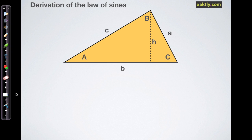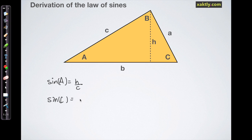I'm going to break this triangle — as we can for all non-right triangles — into two right triangles using the side h as labeled here. For each of those two right triangles I'm going to write a sine expression: the sine of angle A is the opposite side over the hypotenuse, which is h over c, and the sine of angle C is h over a.